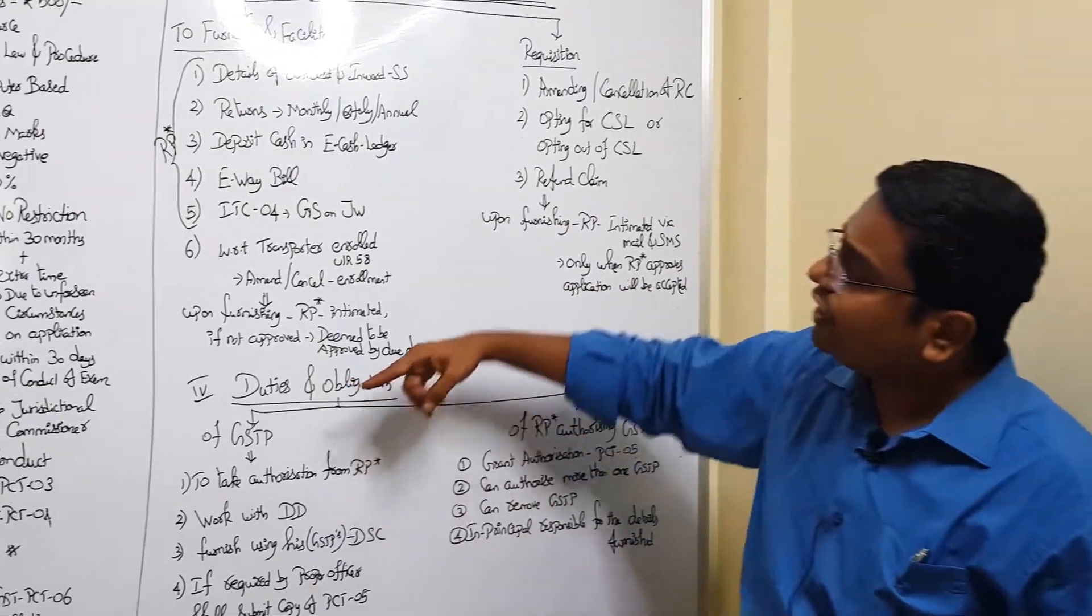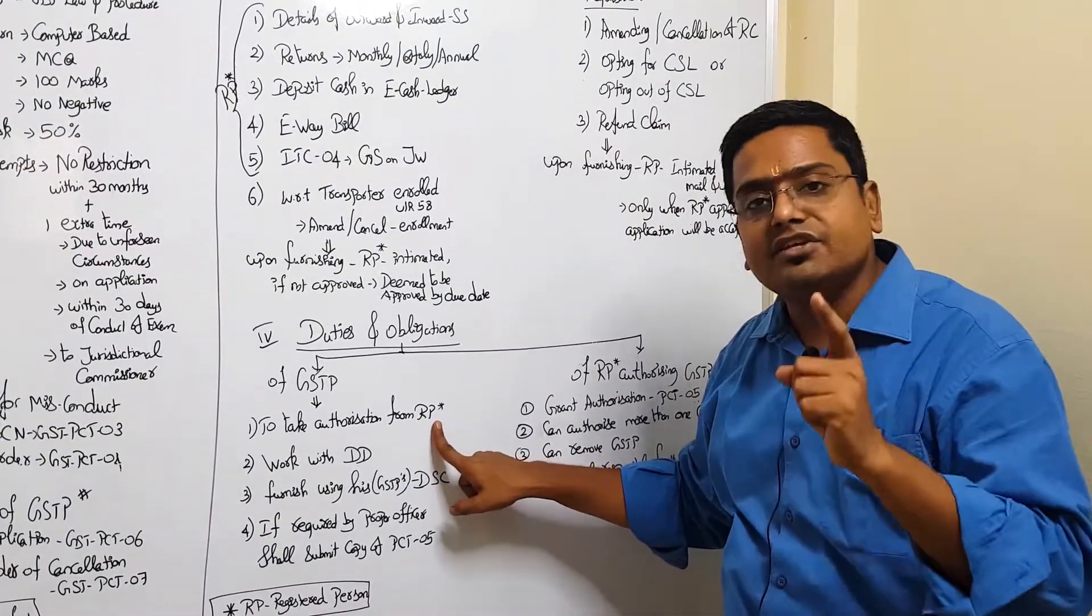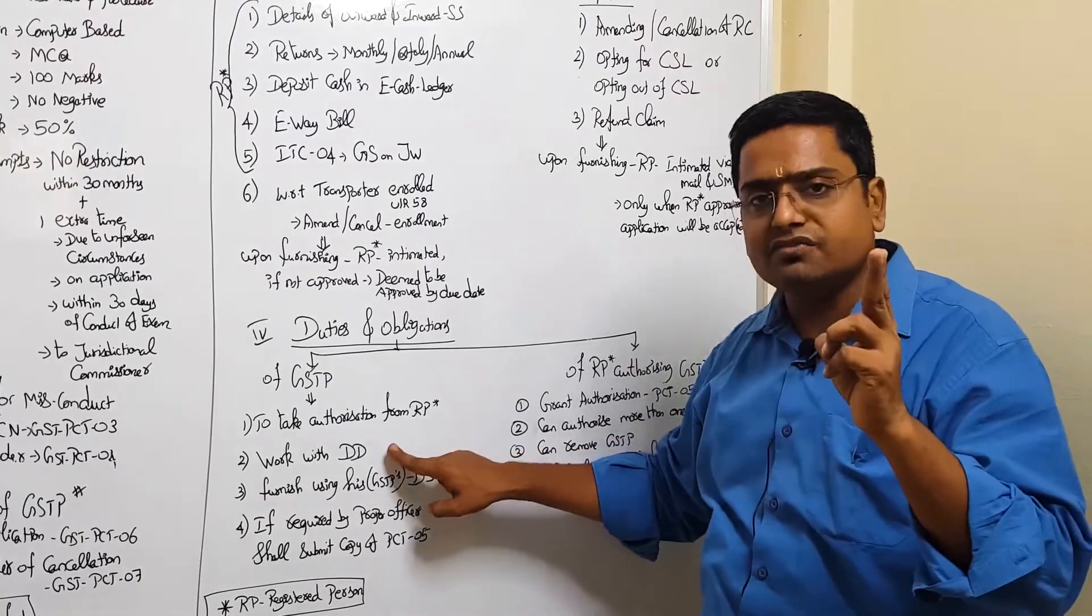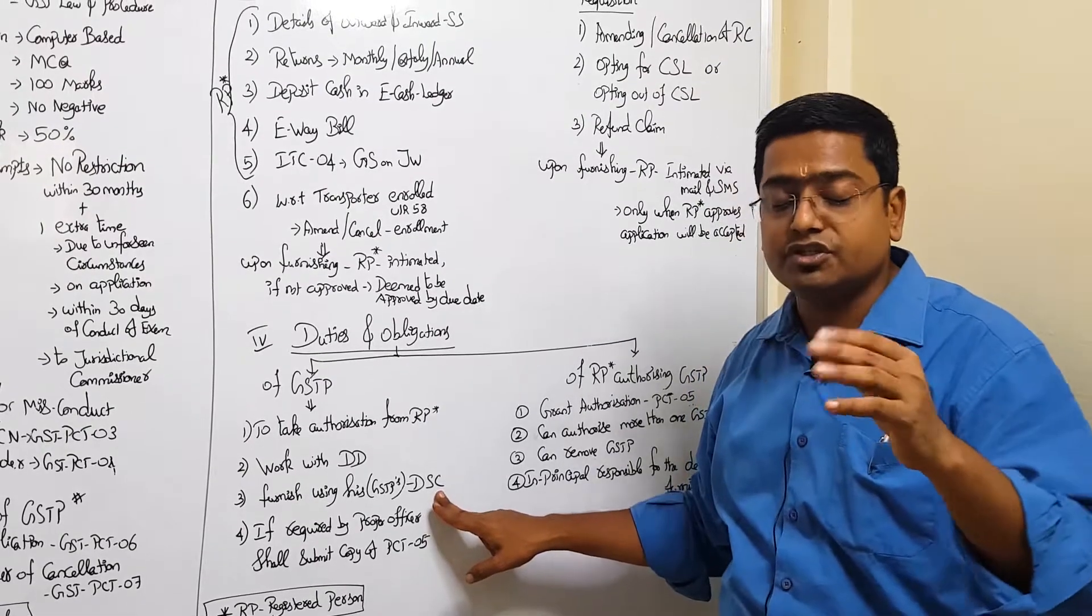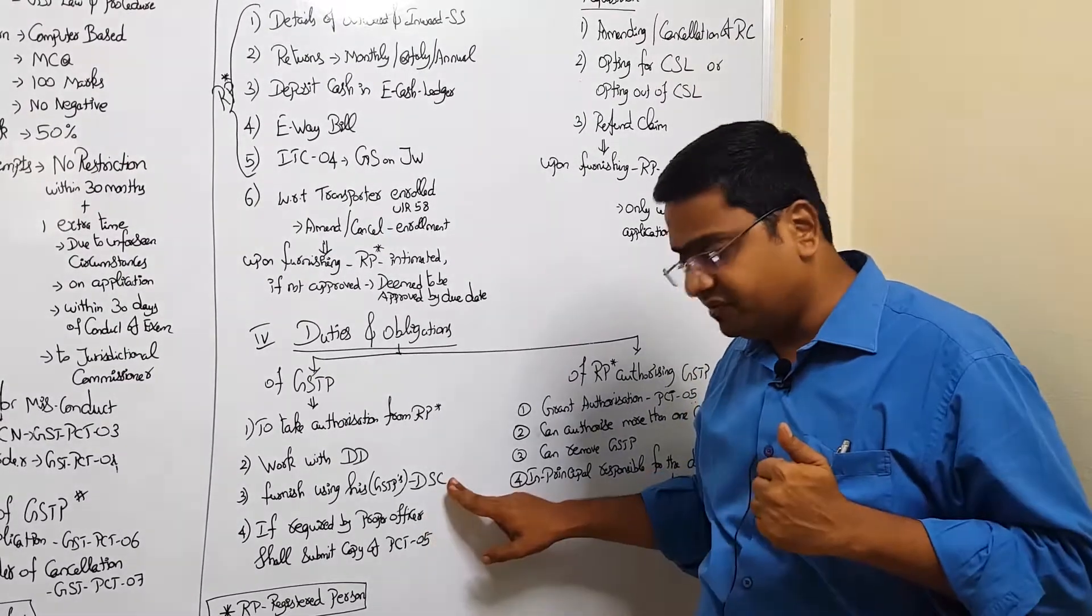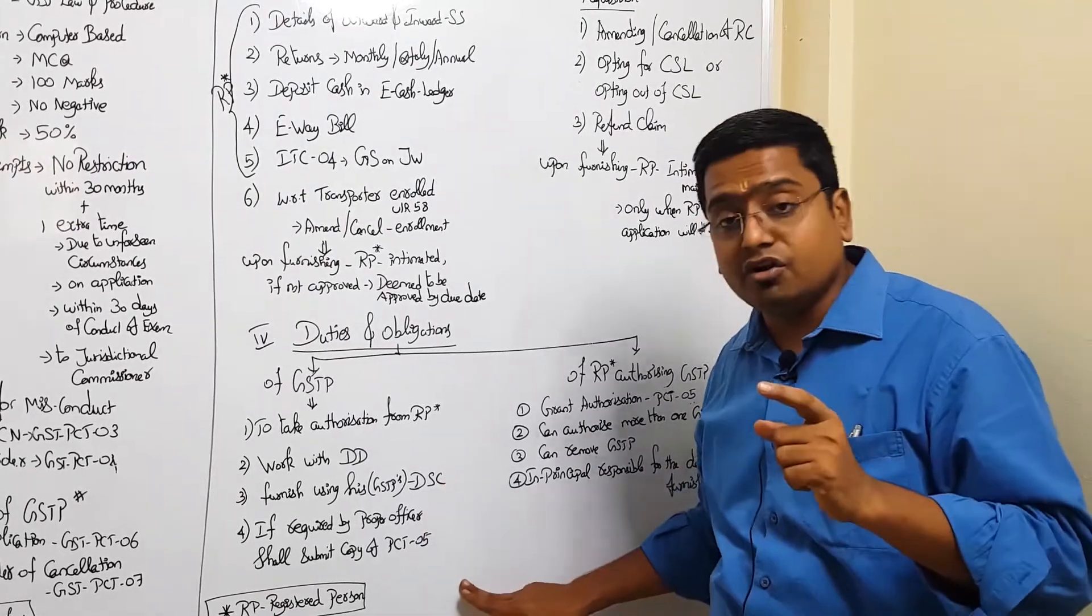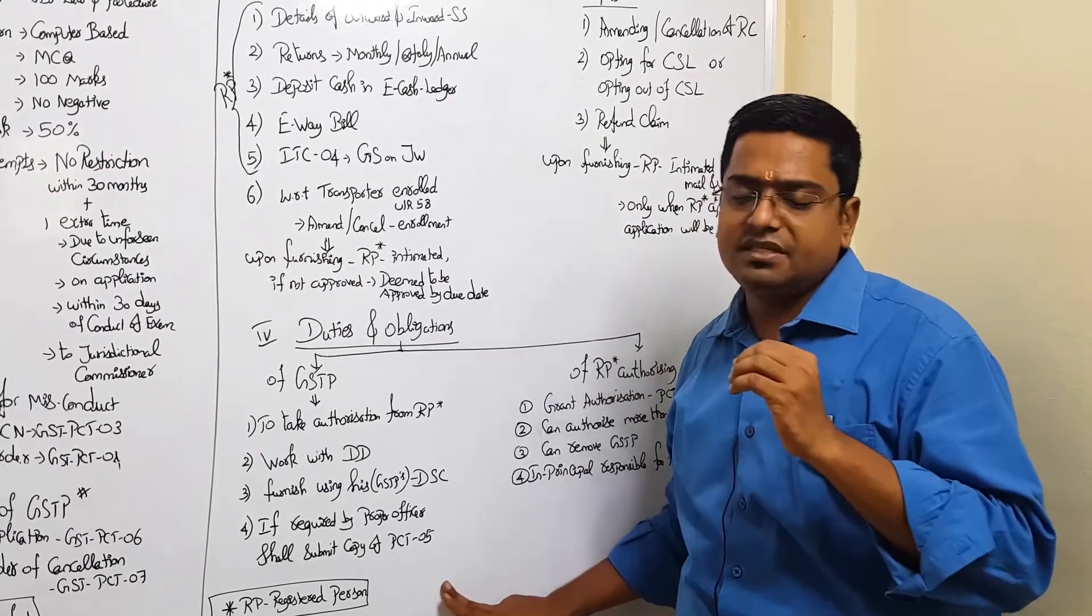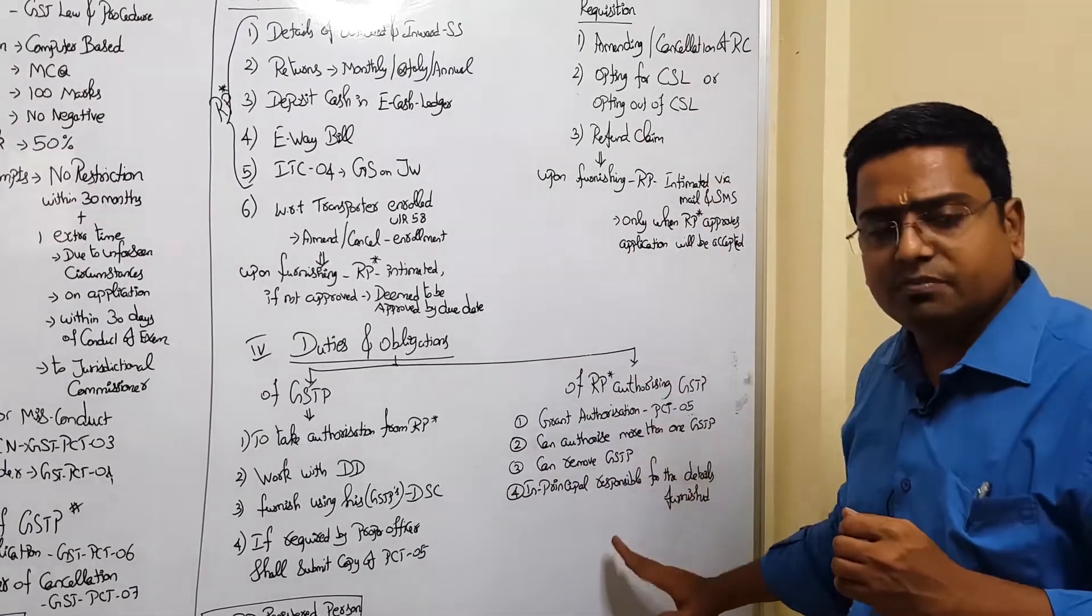What are the duties and responsibilities while executing all this task? First one: a GSTP has to take the authorization from the registered person in PCT-05. He has to execute all his functionalities with due diligence. And he has to file all this information using his digital signature - the GSTP's digital signature. While representing the client in any of the authorities, if the proper authority requires, the GSTP has to furnish a PCT-05 copy duly signed by him.